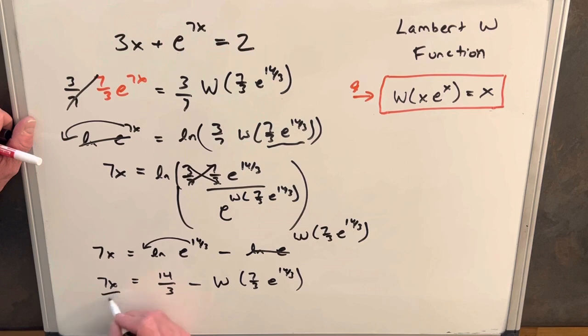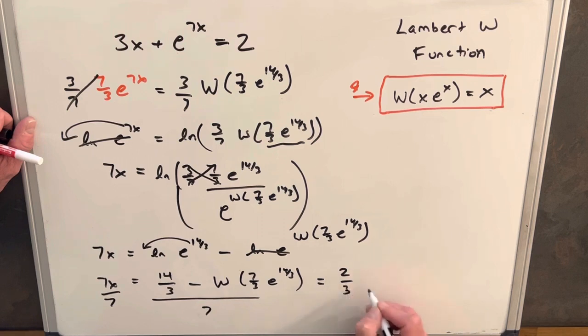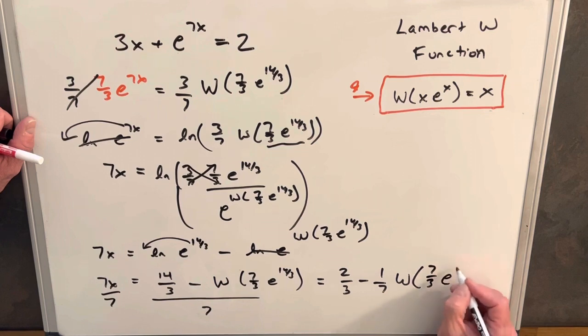And then we'll divide by seven on both sides. And we're left with our final answer, which is going to be x equals 2/3 minus 1/7 W(7/3 * e^(14/3)).